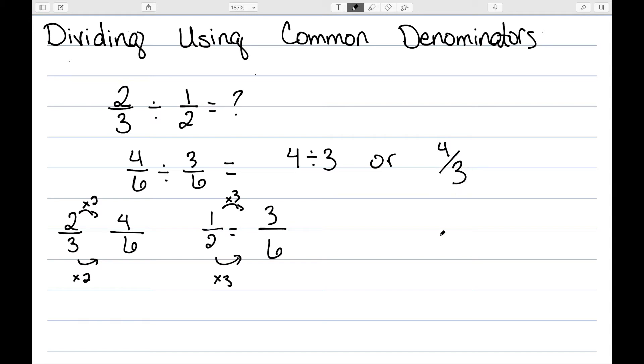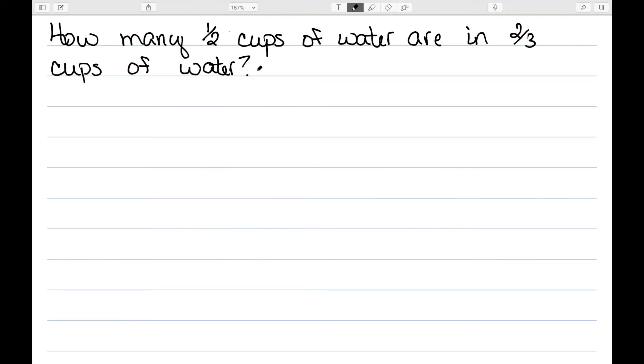So why is it that this method works? Let's think about this problem by thinking how many 1/2 cups of water are in 2/3 cups of water. This problem is 2/3 divided by 1/2. 2/3 is the total amount of water we have, and 1/2 is the size of each group. So we want to know how many groups.